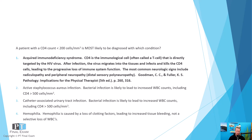Acquired immunodeficiency syndrome — this is when you are infected with the HIV virus, the human immunodeficiency virus. With an HIV infection, what happens is that HIV specifically targets and kills CD4 cells, often called T cells. After the infection, the virus migrates from the serum into the tissues and starts to infect and kill CD4s. Eventually it does a really good job at killing all of these CD4s, which leads to a progressive loss of immune system function.